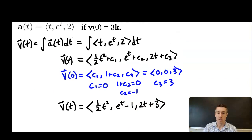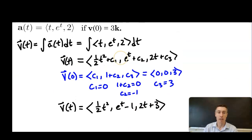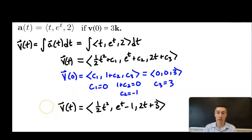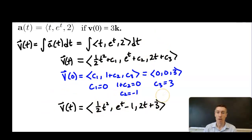They could always extend this problem — they could have given us an initial position as well. In that case, we'd have to integrate our velocity vector function to find the position vector function and use the initial value to find the constants from integrating the three components.